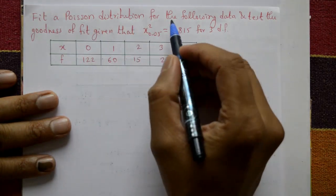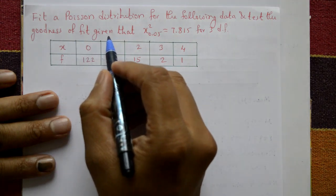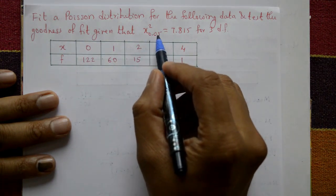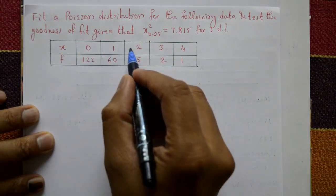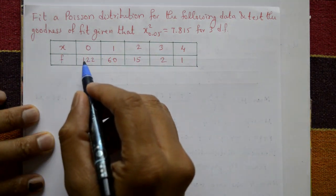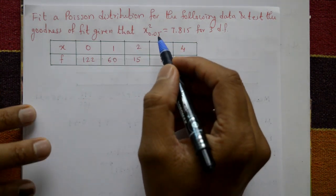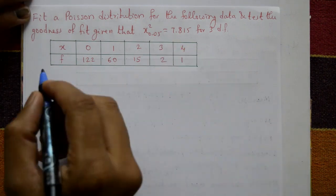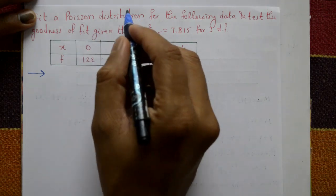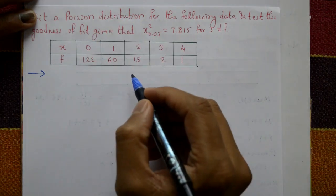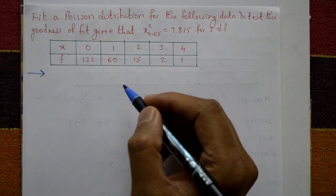Fit a Poisson distribution for the following data and test goodness of fit, given that chi-square at 0.05 equals 7.815. The x values are 0, 1, 2, 3, 4 and the frequencies are 122, 60, 15, 2, 1. For the solution, we shall first find the expected frequencies using the Poisson distribution, then apply the chi-square formula.